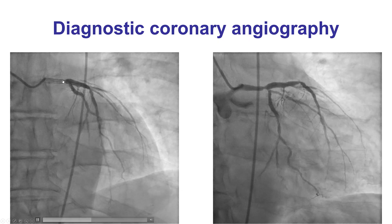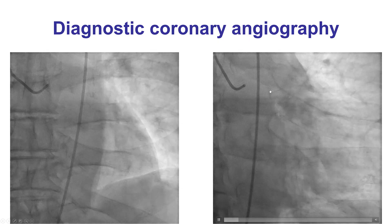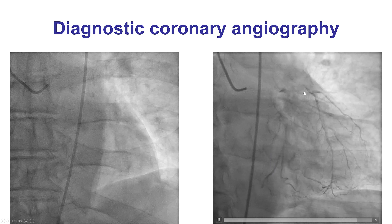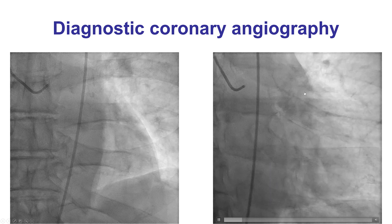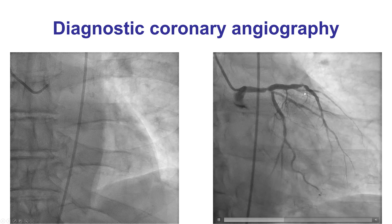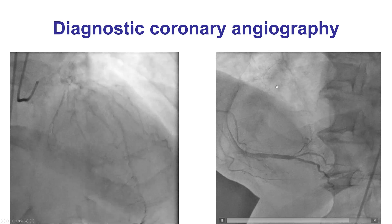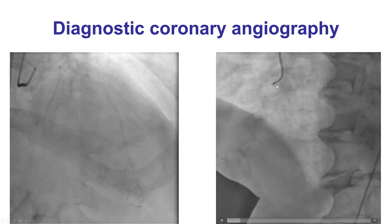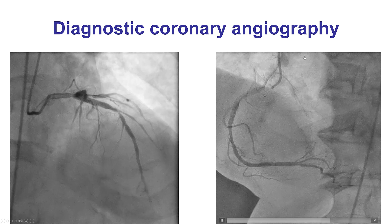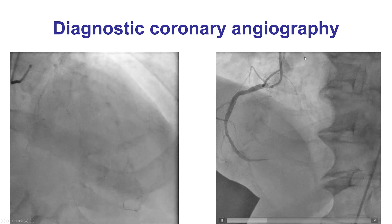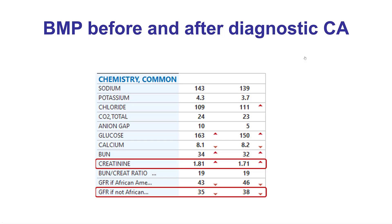Diagnostic angiography demonstrated a distal left main lesion along with a significant lesion in the mid LAD as well as an ostial lesion in the right coronary artery. This was clearly a challenging situation given the patient's age and chronic kidney disease. His GFR was 35.